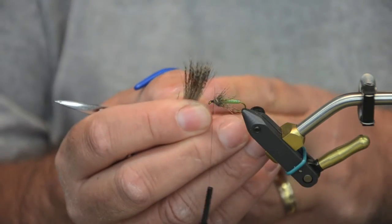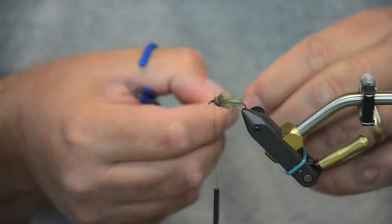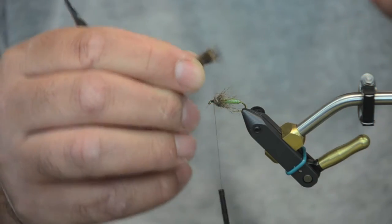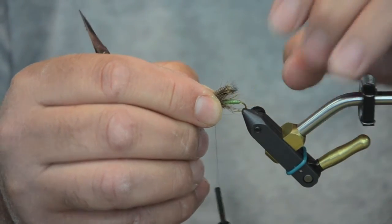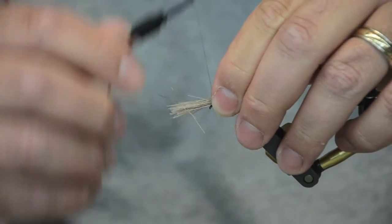So I've taken and stacked my deer hair. And I don't want to use a lot. You know, this is a wet fly. And this is only going to come back to about half way of the body. It's supposed to look like a budding wing.